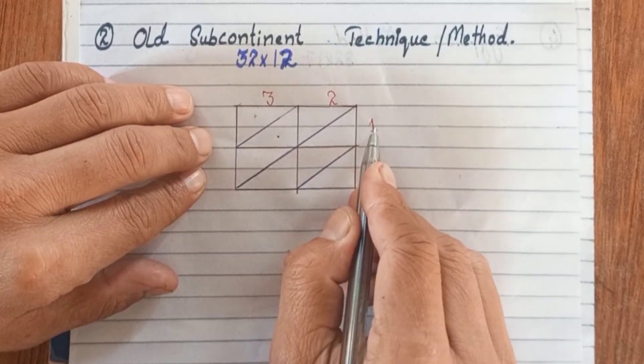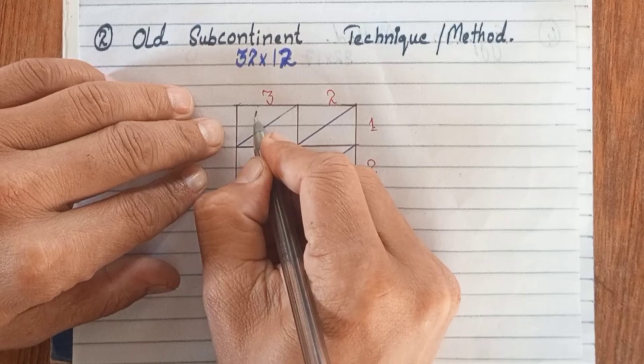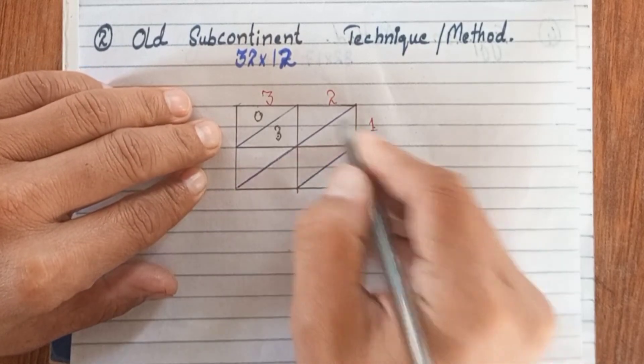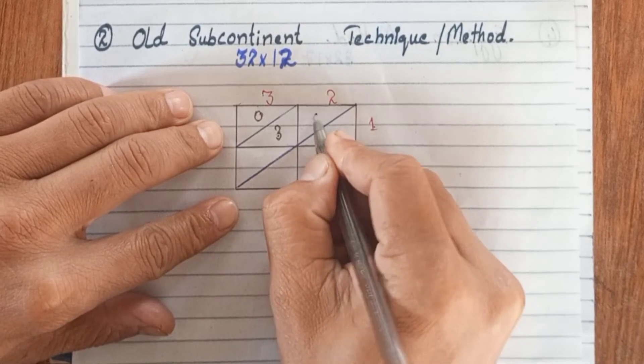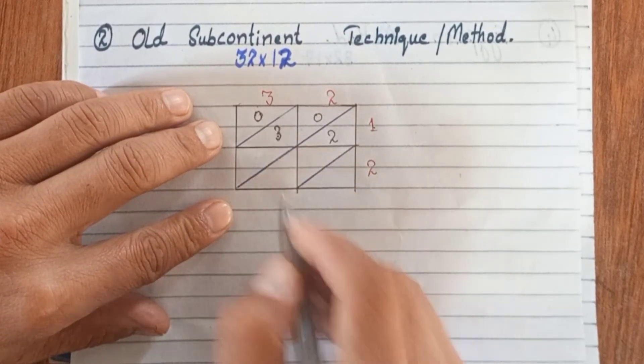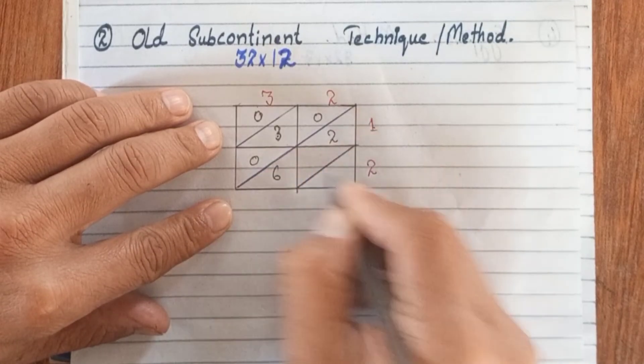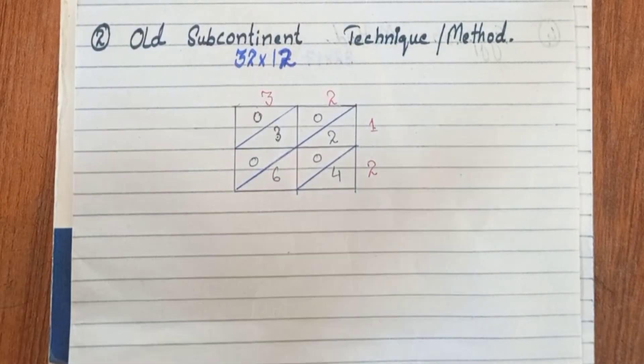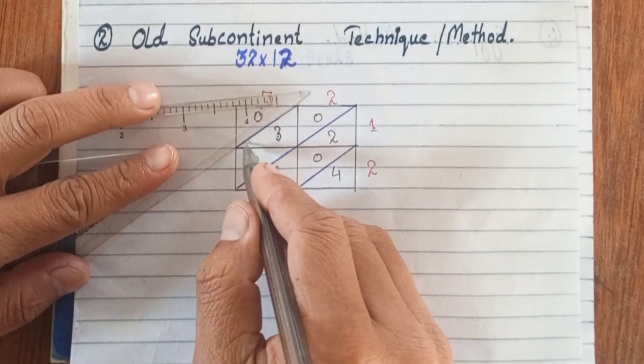So 3 multiplied with 1 is 3, we write 0 and 3 here. 3 multiplied with 2 is 6, we write 0 and 6 here. 2 multiplied with 1 is 2, and 2 multiplied with 2 is 4, we write 0 and 4.